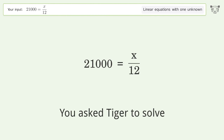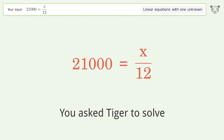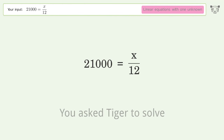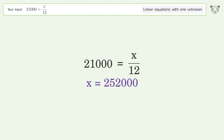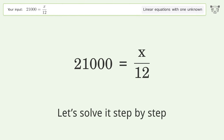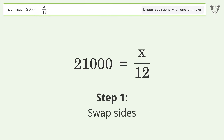You asked Tiger to solve this — it deals with linear equations with one unknown. The final result is x equals 252,000. Let's solve it step by step: swap sides.